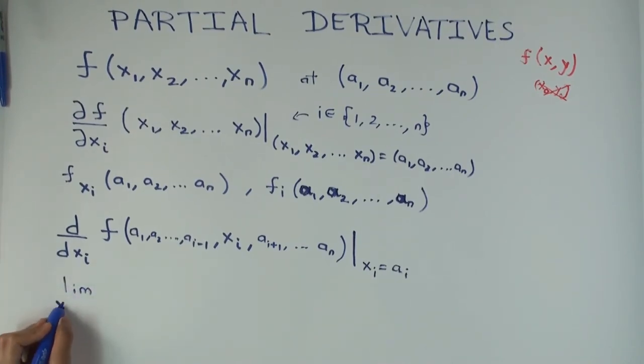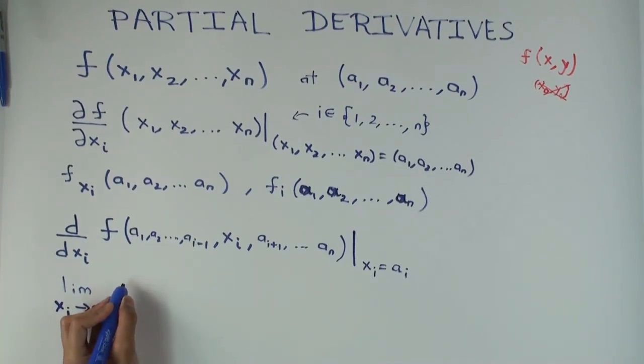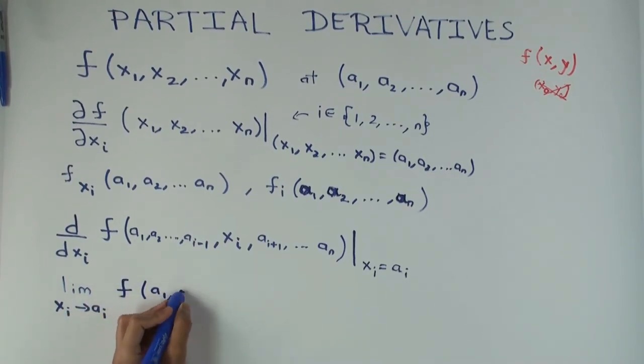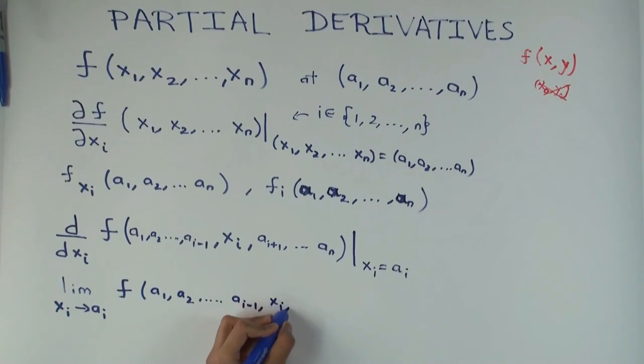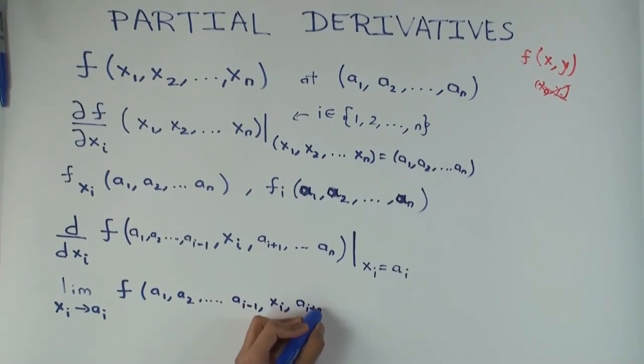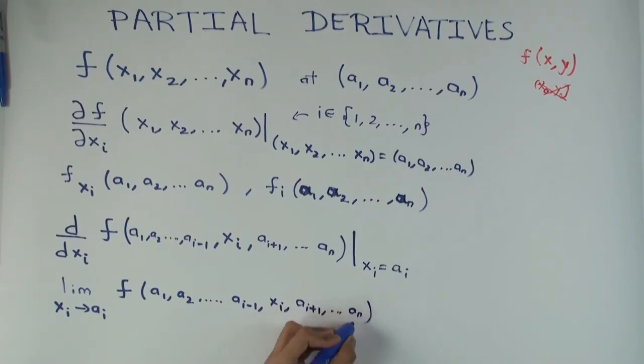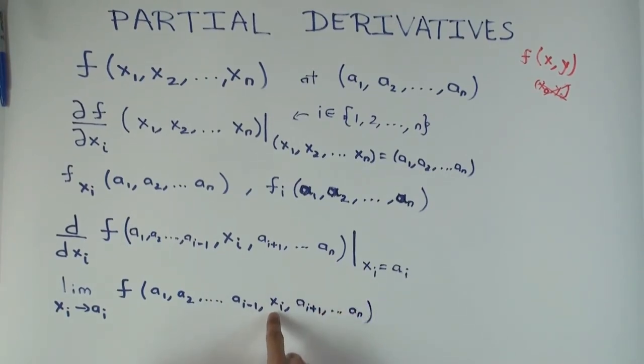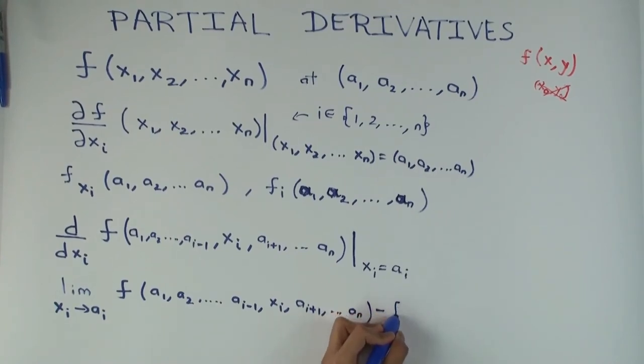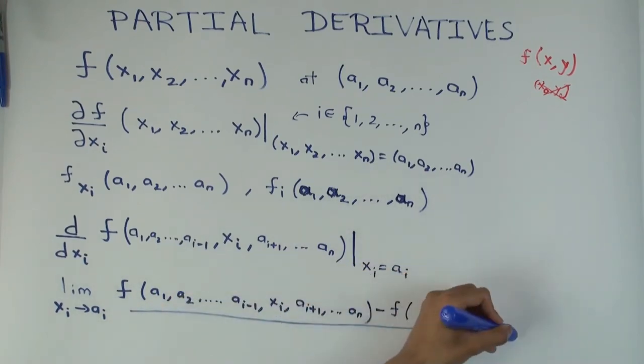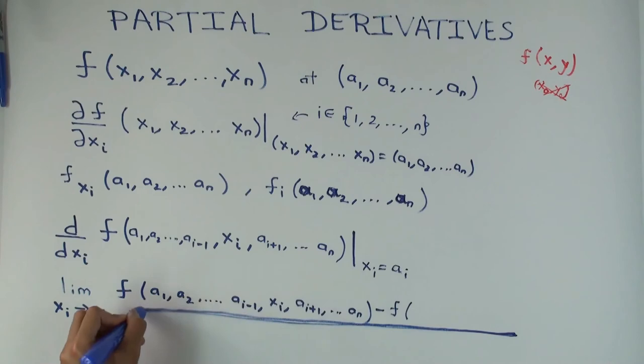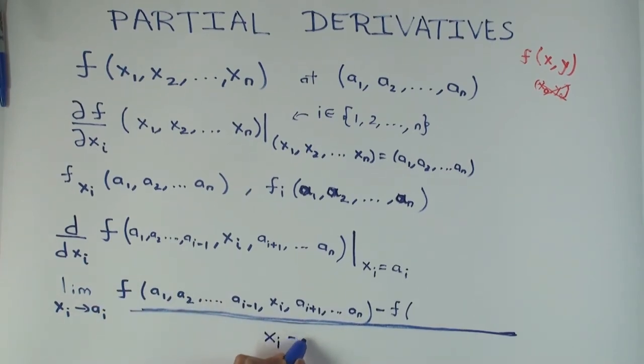Okay. And now I want to write this as a limit. So the derivative is a limit of a difference quotient. Let's limit xi approaches ai of where all the coordinates except that one are ai, and that coordinate is just xi minus f of, and the derivative, the denominator is xi minus ai.